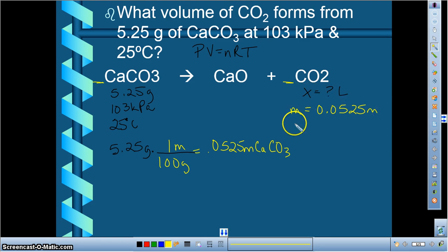Alright, so we know that this information didn't change. That's the same. So our temperature is going to be 273 plus 25, which is going to be 298 Kelvin. We know that our pressure is going to be 103 kPa. We're going to have to convert that to atmospheres to be able to use the R value, which is 0.08206.